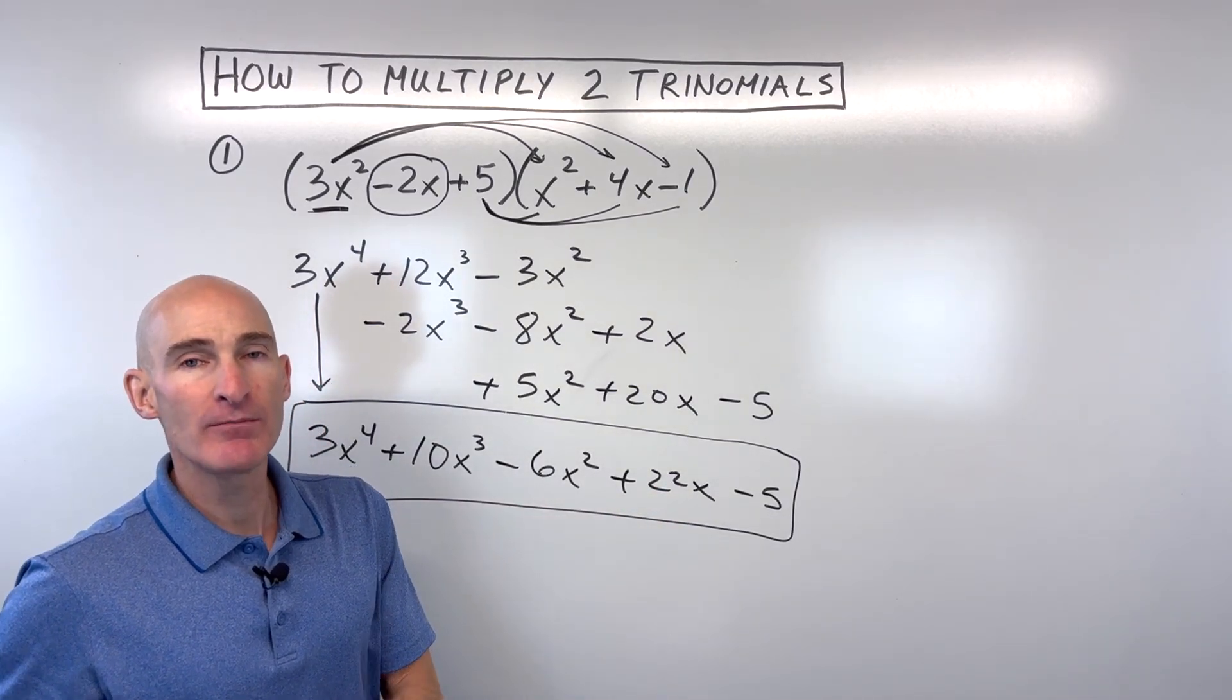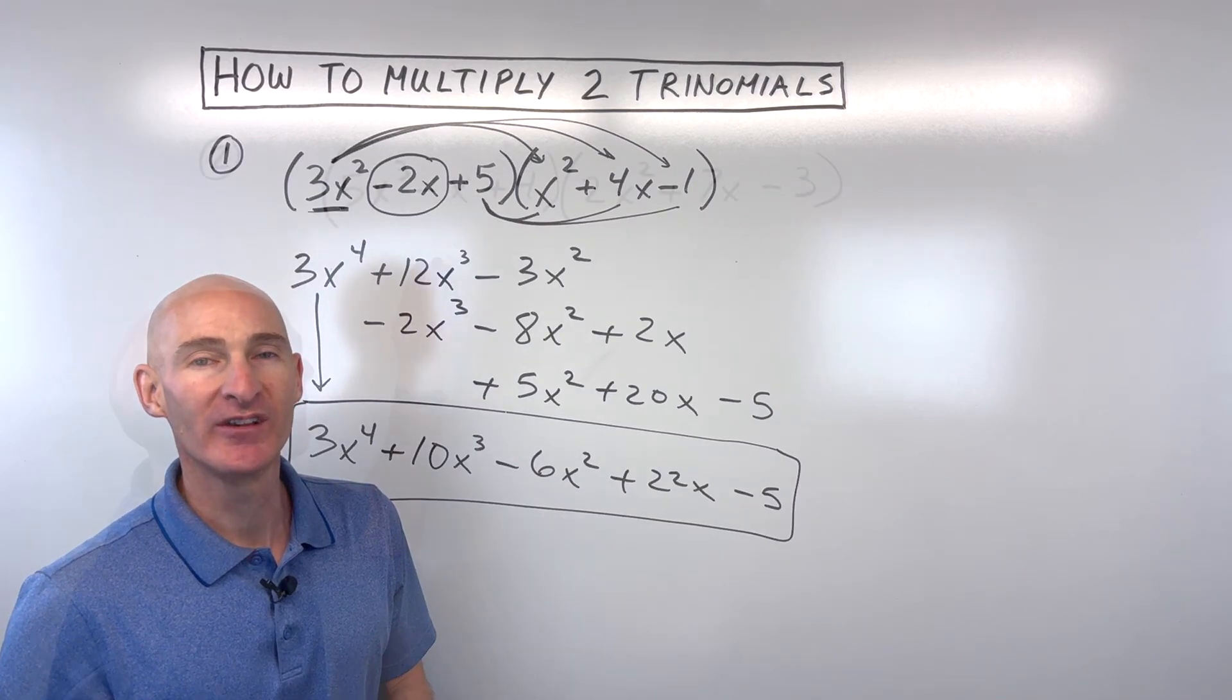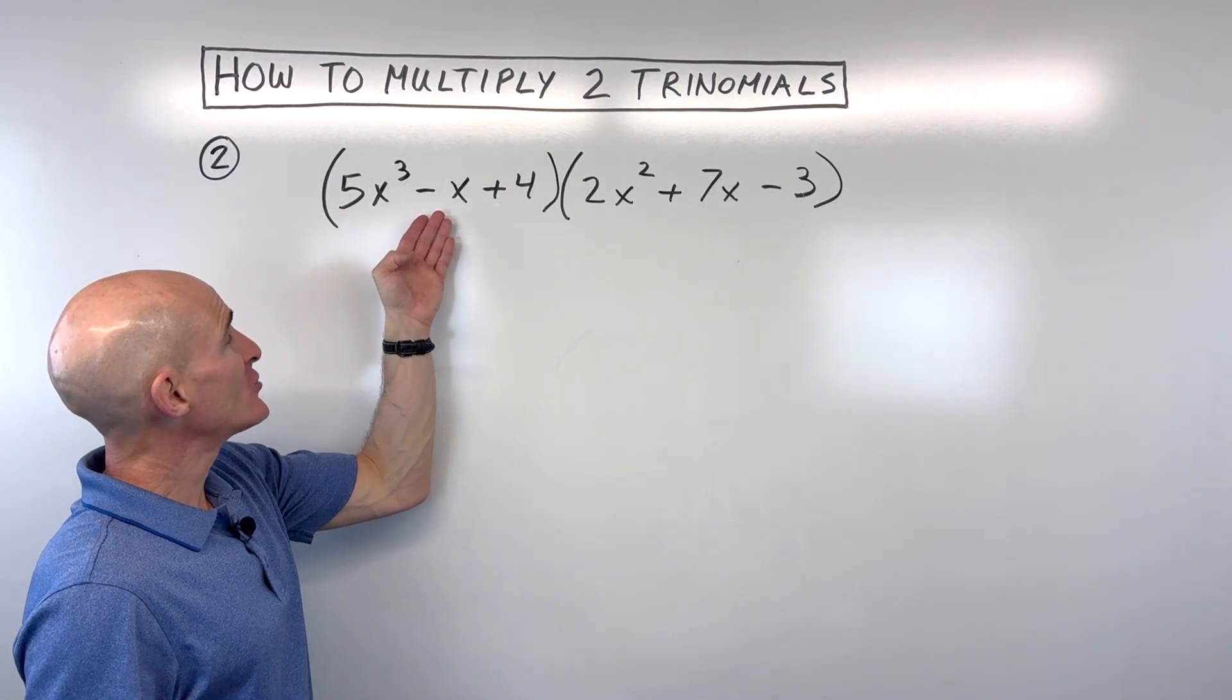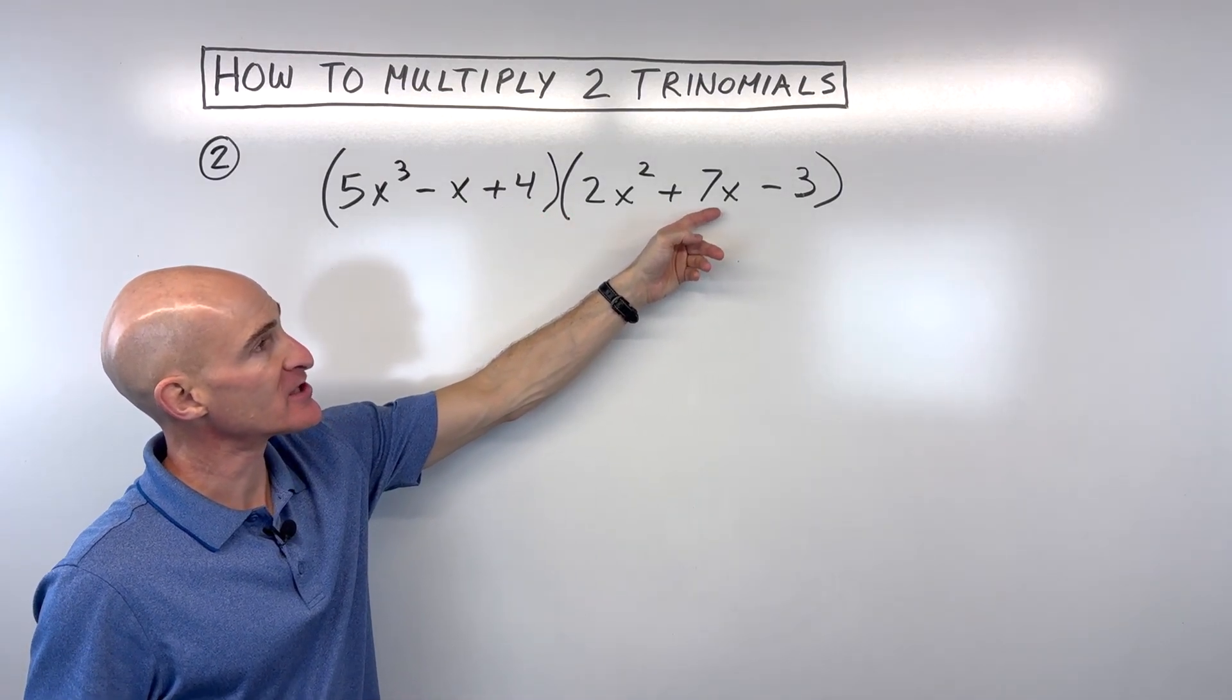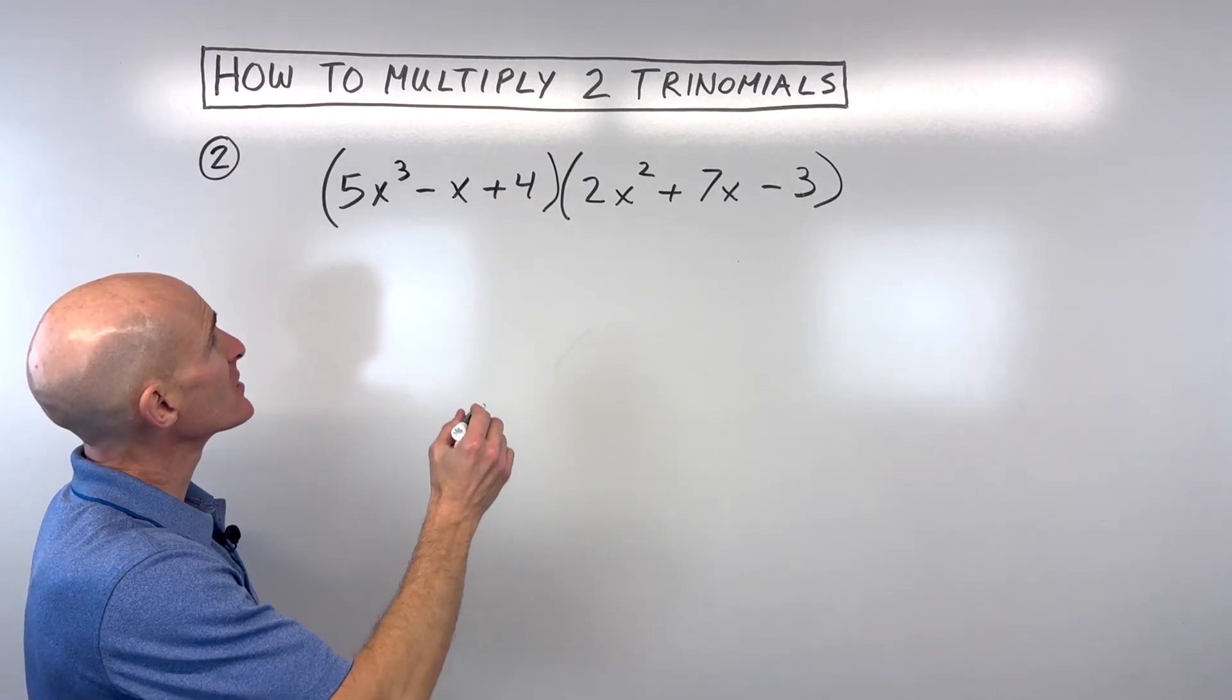Let's take a look at another example. See if you can pause the video and try this one on your own. Okay, we have 5x cubed minus x plus 4 multiplied by 2x squared plus 7x minus 3. So let's go ahead and do this problem.